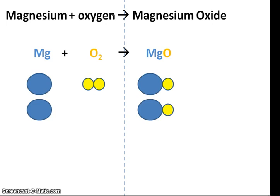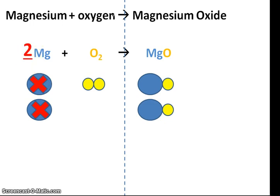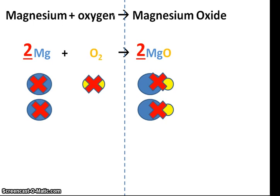Now that I'm happy that I have the correct amount of atoms on both sides, I need to count how many lots of each atom I have. I have two magnesium atoms, so in front of the magnesium symbol here I can write a big two. I have one set of oxygen atoms, so I could put a one here, but I'm going to leave it blank. And finally, I have two molecules of magnesium oxide, so just before the magnesium oxide symbol here I'm going to write a big two. This is a balanced symbol equation.